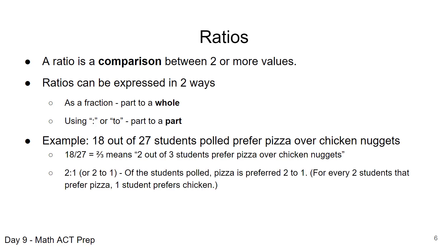You could also see it in the form of 2 to 1, and even though in that first case where we have the use of the colon, when we're reading it we usually read it as 2 to 1. So of the students polled, pizza is preferred 2 to 1. So again, for every two students that prefer pizza, one student is going to prefer chicken.